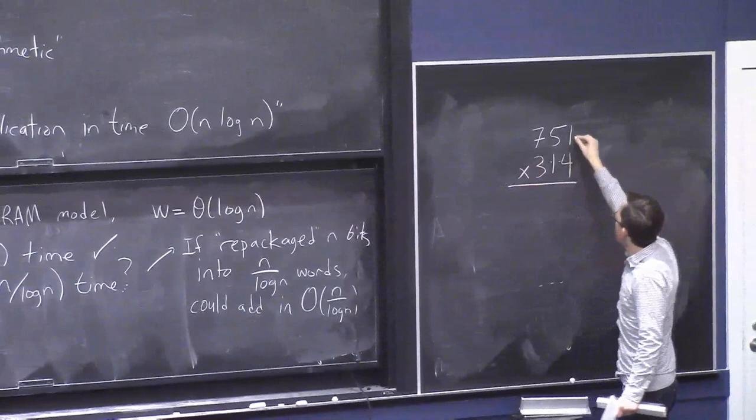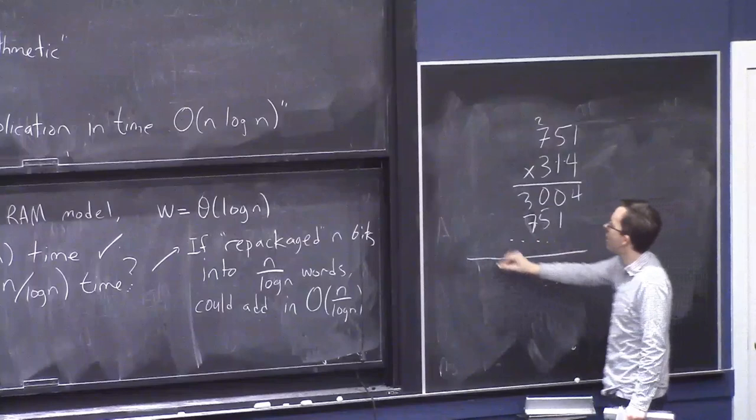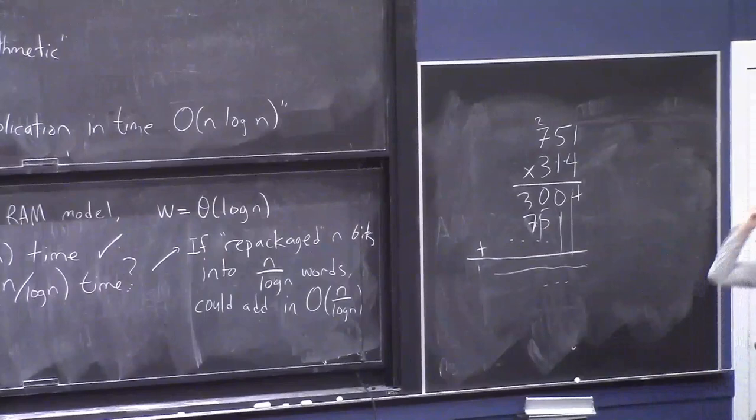How are you going to multiply them? So again, you can still do the algorithm you learned in school. If the number of digits is 3, you can be like, OK, 751 times 314. You know this algorithm. 4, 0, there's a carry, 30, whatever, 7. Anyway, you multiply them, and then you do some adds, and you get the answer here.